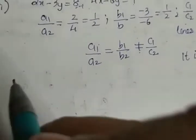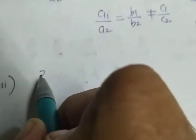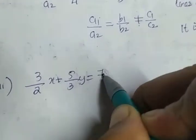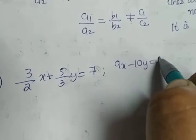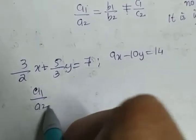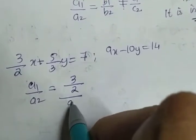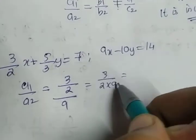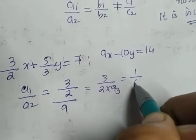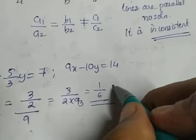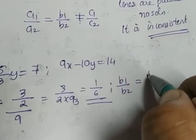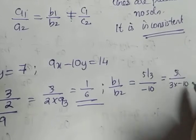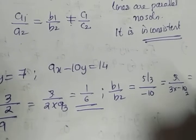Moving to the third part of the same question. The third part is (3/2)x plus (5/3)y is equal to 7 and 9x minus 10y is equal to 14. So a1 by a2 will be (3/2) divided by 9, that is (3/2) into (1/9). So 3 and 9 get cancelled giving you 1 by 6. Similarly, b1 by b2 is equal to (5/3) divided by minus 10, that is (5/3) into (1/minus 10). 5 and 10 get cancelled giving you minus 1 by 6.